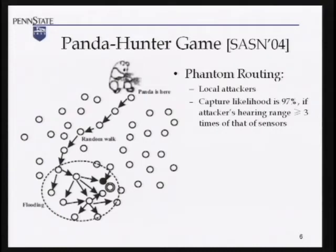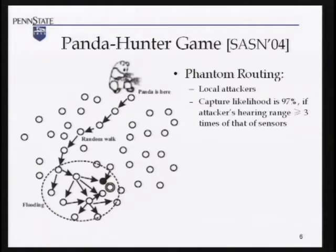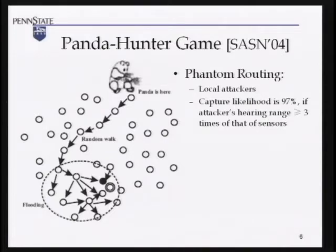Earlier work from a SASN workshop in 2004 modeled this as the panda-hunter problem. Sensors send back information like 'the panda is here' to the base station. The idea proposed was phantom routing: when you detect an event at a location, you first send the event message through a random walk in the surrounding area — randomly from one location to another. Once a certain condition is met, the message is forwarded towards the base station. When it's close, maybe three hops away, flooding of the packet occurs in that nearby area.